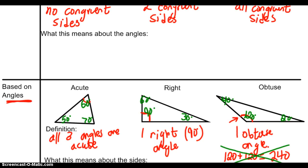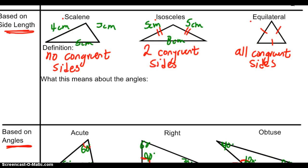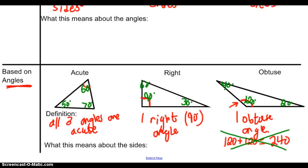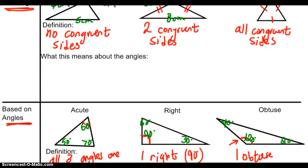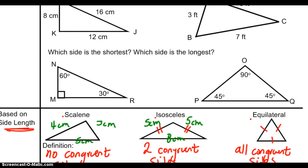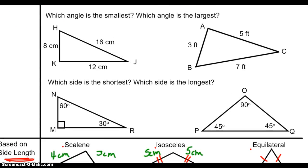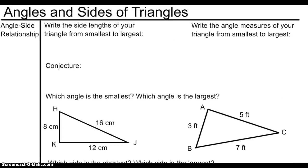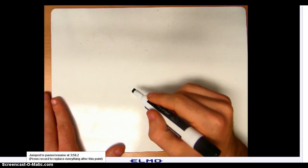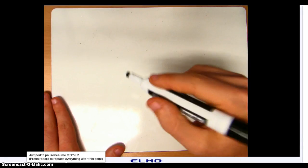So we've learned about scalene, isosceles, and equilateral triangles based on side length, and we've learned about acute, right, and obtuse based on angles — those are kind of a review from middle school or even elementary school. But let's return back to the top of the page, because there's something special that happens between the sides and the angles of a triangle. To see this relationship clearly, do this for me.